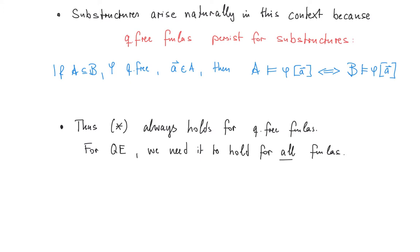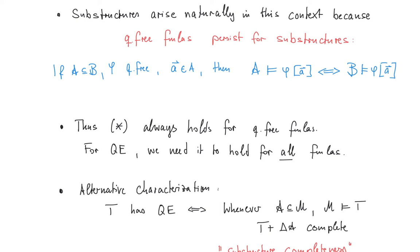It is not very hard to prove this and you should as usual give it a try. And then if you compare this criterion here to the criterion star for quantifier elimination, you can use this to prove that criterion star actually always applies for quantifier-free formulas. But for a theory to have quantifier elimination, we need it to hold for all formulas, not just the quantifier-free ones. And to further stress the role that substructures play when it comes to quantifier elimination, look at this alternative characterization here.